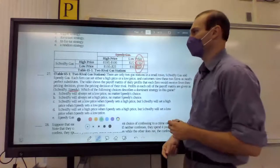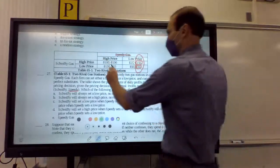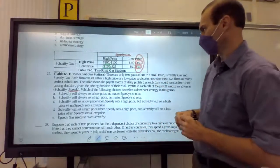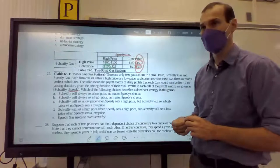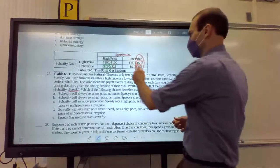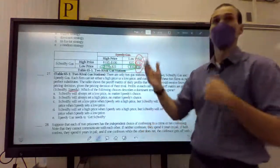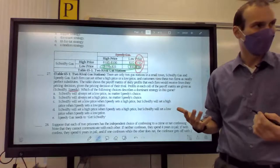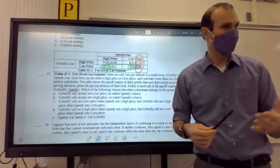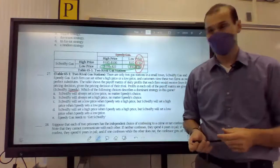If Speedy has a high price, what should Schwifty do? Make 100 or 150? 150. And if the low price here is 50, what should we do? Low price. So, Schwifty has a dominant strategy too. And the overall strategy of the game for both firms is to do what? Low price. Low price, low price. They both have a dominant strategy. That means they'll do a low price no matter what the other firm does.